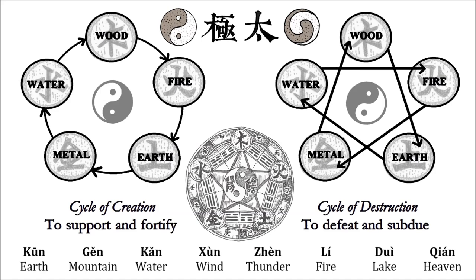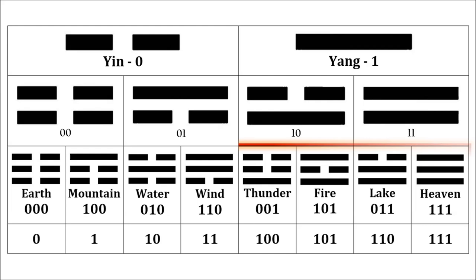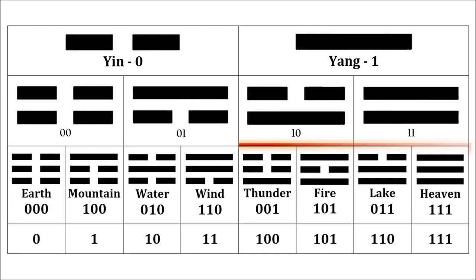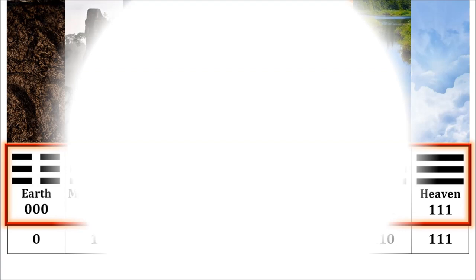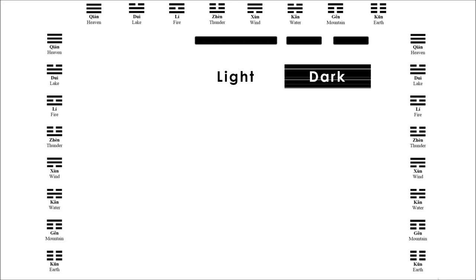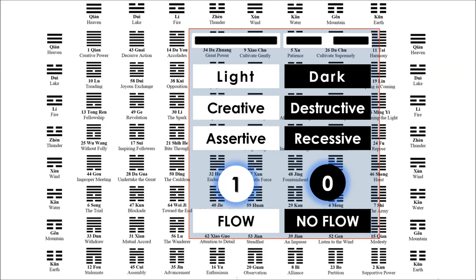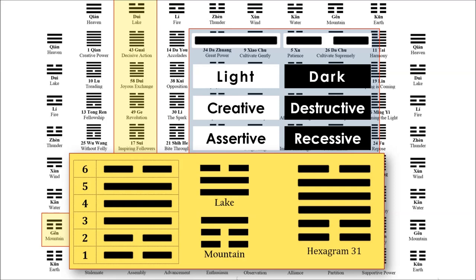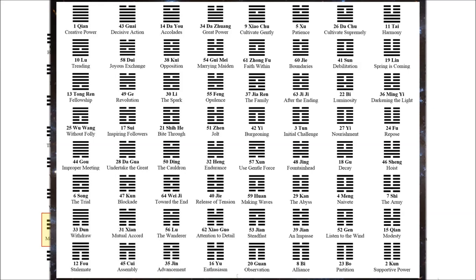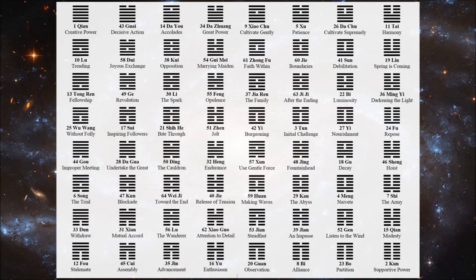So, to recap: each building block — these eight fundamental ingredients of life — are, according to the cosmology of the I Ching, just ones and zeros. Eight trinities combine in binaries for a total of sixty-four permutations, or strings of six values of yin and yang, light and dark, creative and destructive, assertive and recessive forces, flow versus no flow. These strings of six are called hexagrams. The sixty-four hexagrams represent a total of three hundred and eighty-four lines of binary code — sixty-four times six — and are therefore a scaled-down figurative representation of the universe.